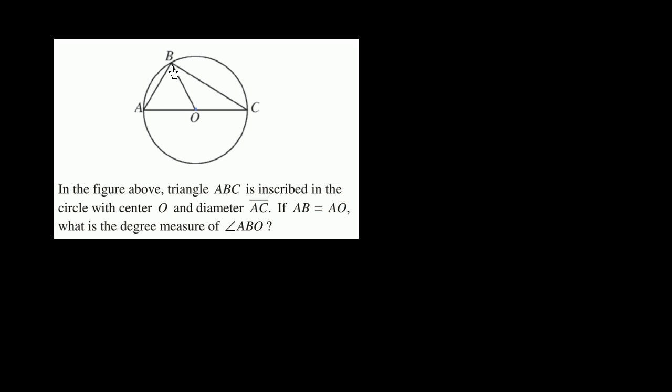If AB equals AO, and AO is the radius, then AB is the same length as the radius. What is the degree measure of angle ABO?